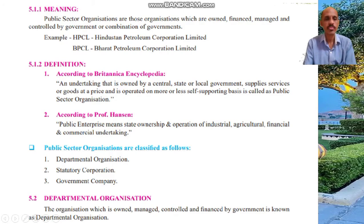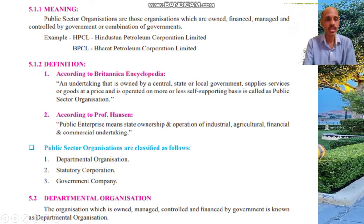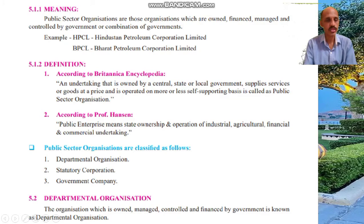Public sector organizations are classified as follows — three types: number one, departmental organization; number two, statutory corporation; and number three, government company.